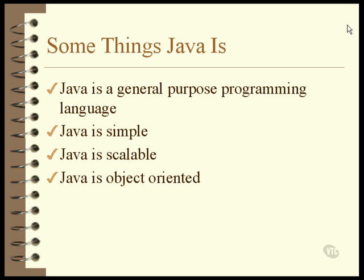Java is an object-oriented programming language. It is so object-oriented that you can't help but write a Java program in terms of objects. If you have no prior programming experience, then you'll have no problem with this concept because you won't have any preconceived notions of what objects are. If you have some experience with another language, you'll find that things operate about the same in Java as they do in other object-oriented languages, but you must be very careful about some of the terminology. For example, the terms interface and property have special meanings in Java that can be entirely different from the meanings in other languages.